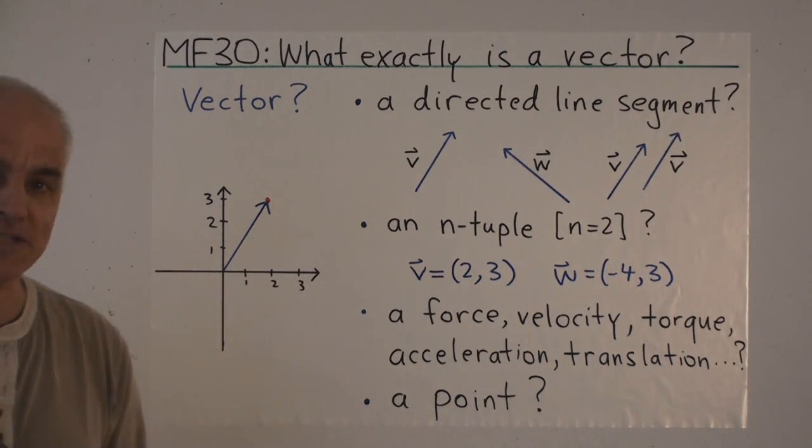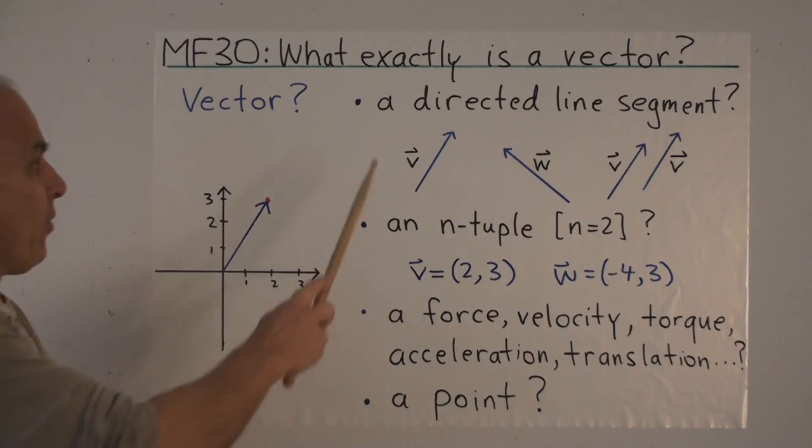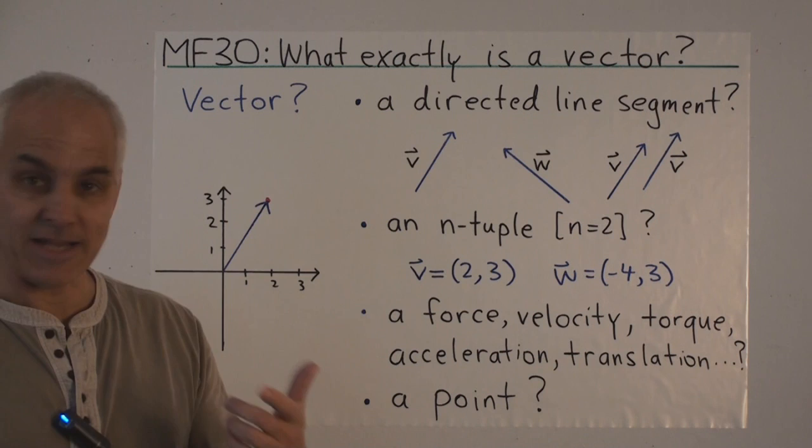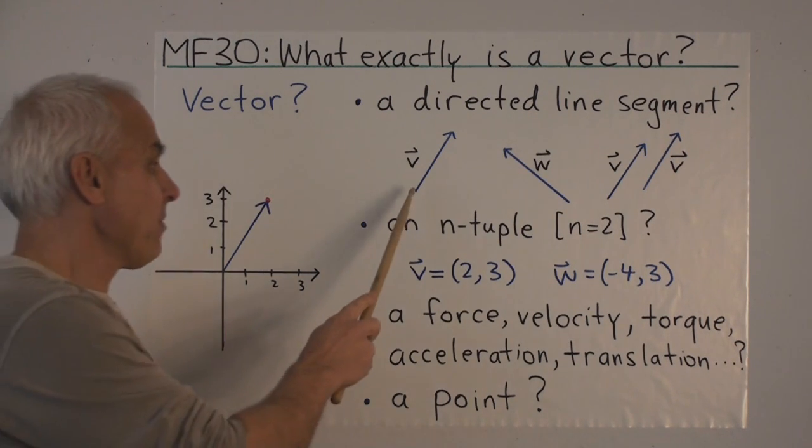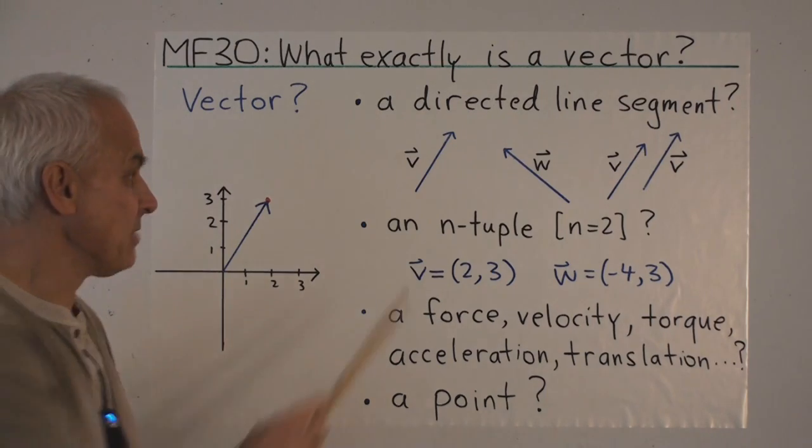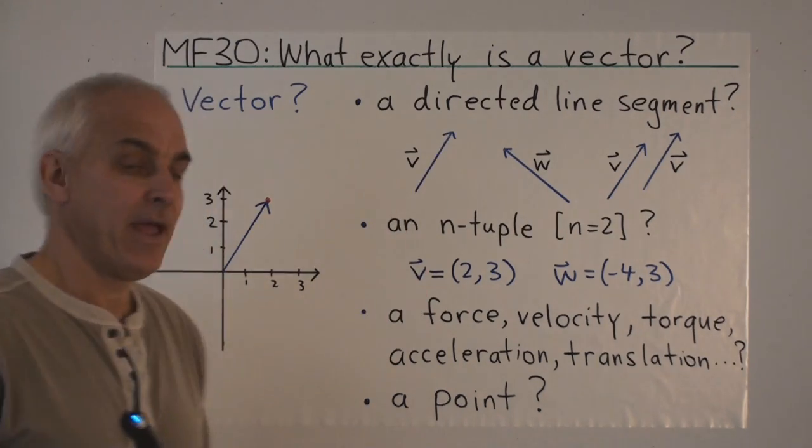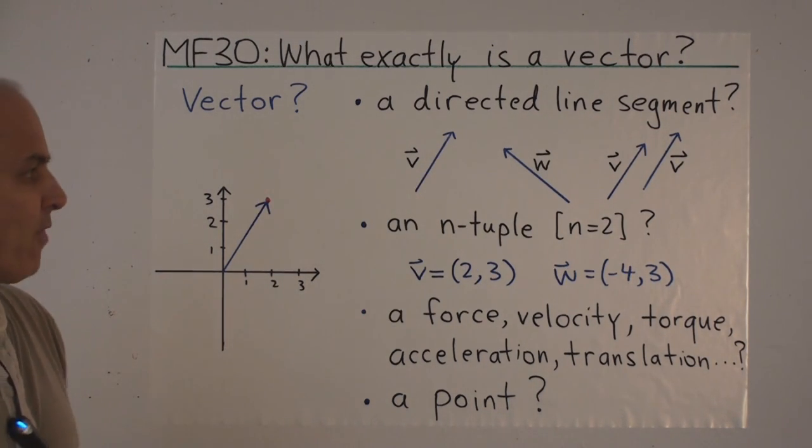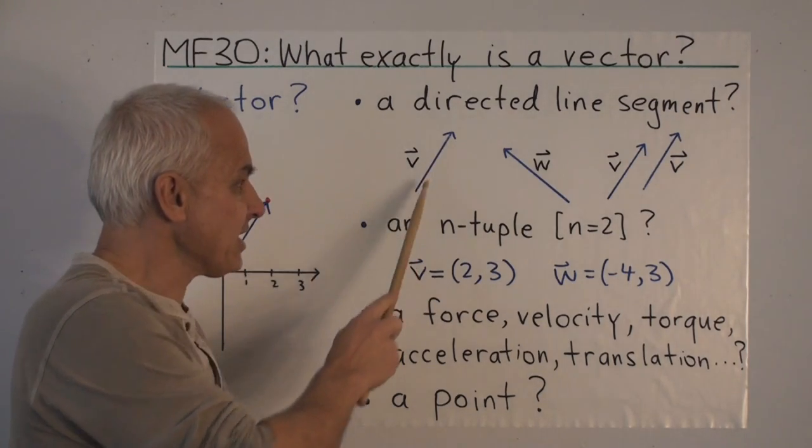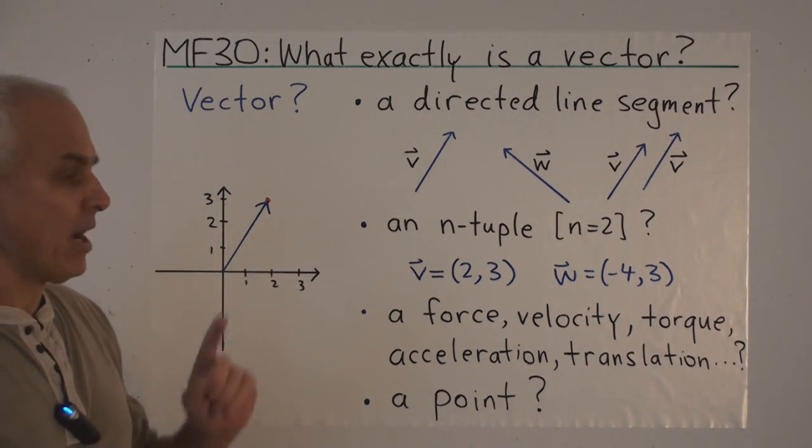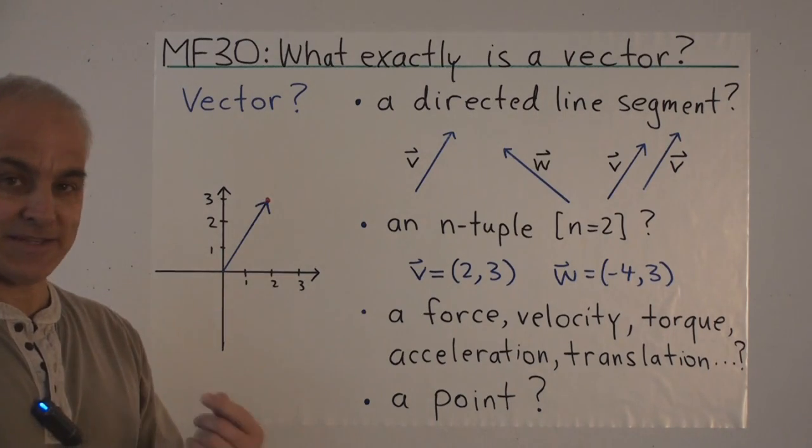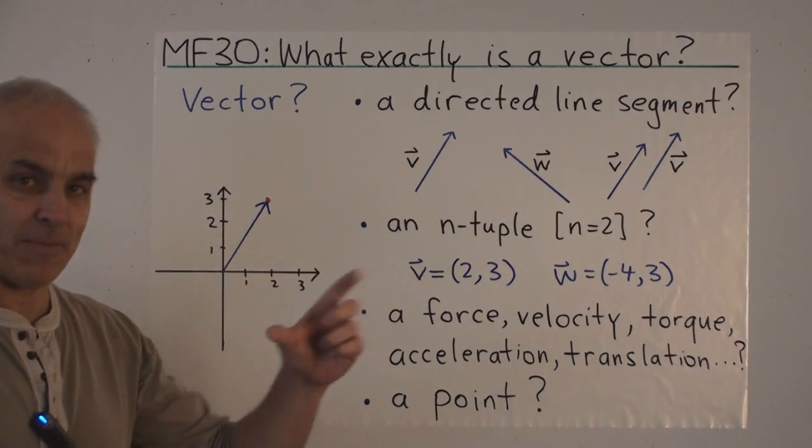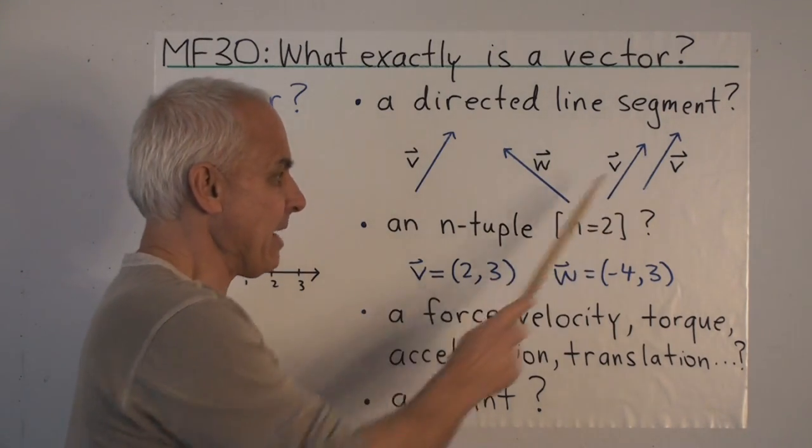Well, there are a number of possible answers. We could say that a vector is a directed line segment, and that captures very nicely what it is that we have in mind. We have in mind a quantity which has both a direction and a magnitude. So here's a vector called V, or a picture of one. And because it's a directed line segment, we do not mind if we translate it. We still call that the same vector. So these two vectors over here, which are parallel to this one and have the same length, we consider them to be the same vectors.